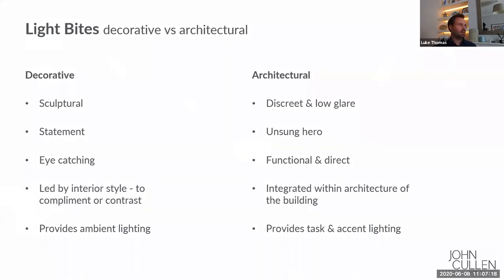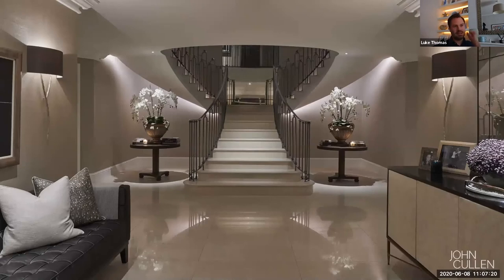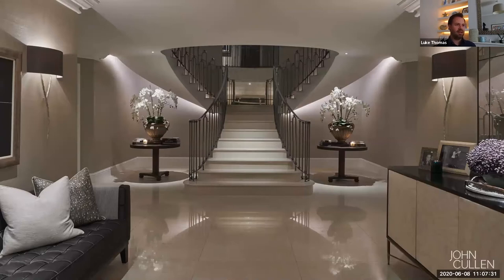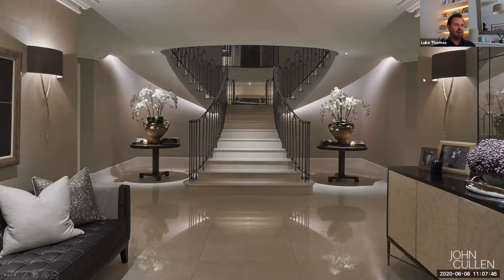To put some context into that — here you can see the different elements in play. Over the flowers on these side tables, we have a ceiling-recessed spotlight, very low glare, giving accent light down onto the flowers to pick them out as a feature. Behind the staircase, there's a linear LED strip providing a backlighting effect. That is then complemented by these wall lights, which give you that soft ambient lighting effect that fills the gap between the accent lighting.